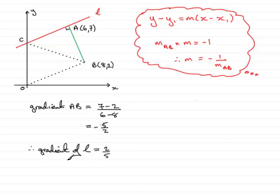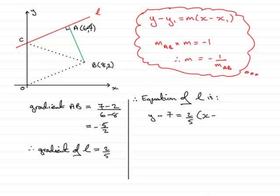So when it comes now to finding the equation of the line L, we can say that therefore equation of L is, and what's it going to be? Well, we can use this form of the equation of a straight line and that will give us y minus y1. Y1 is now 7 equals the gradient 2 fifths, x1 multiplied by x minus x1. So it's x minus and the x1 coordinate is 6.